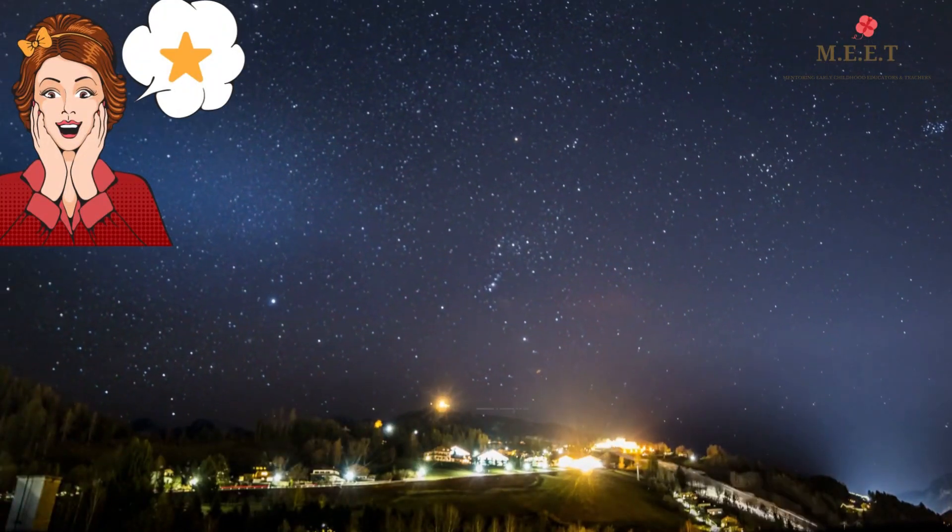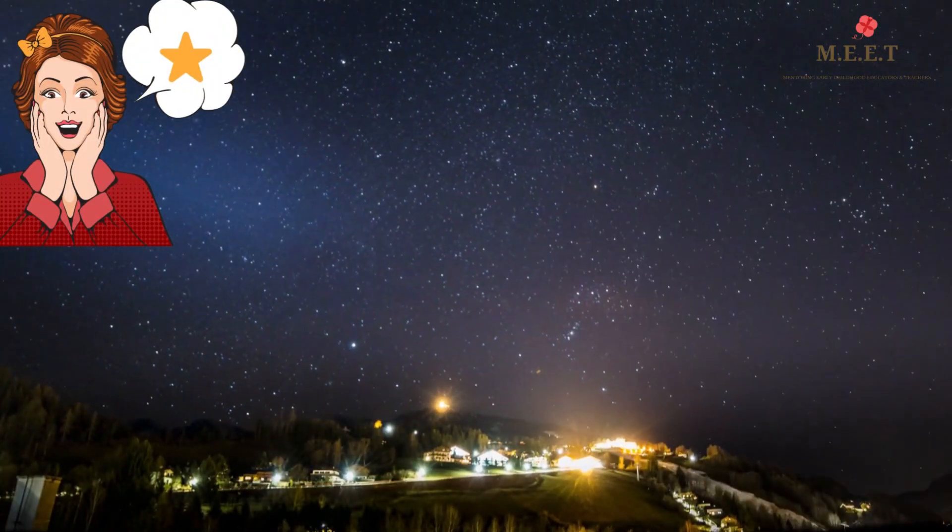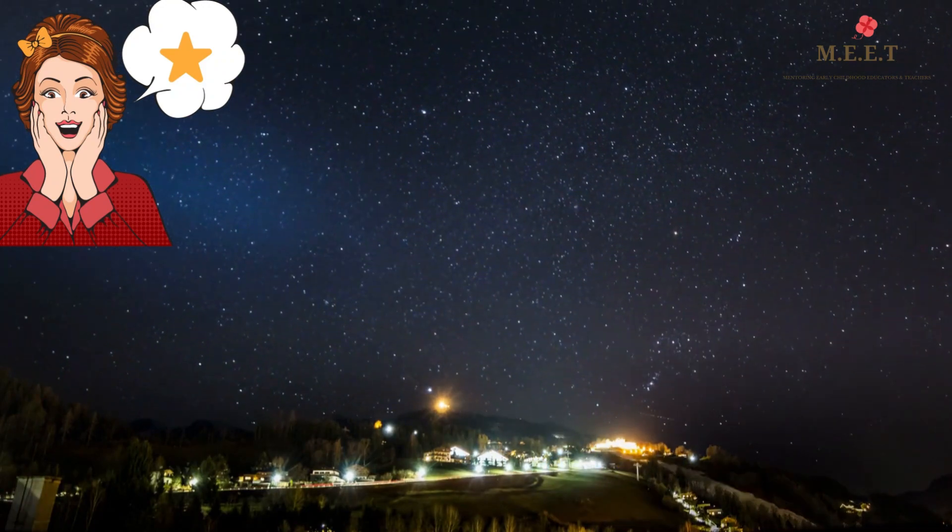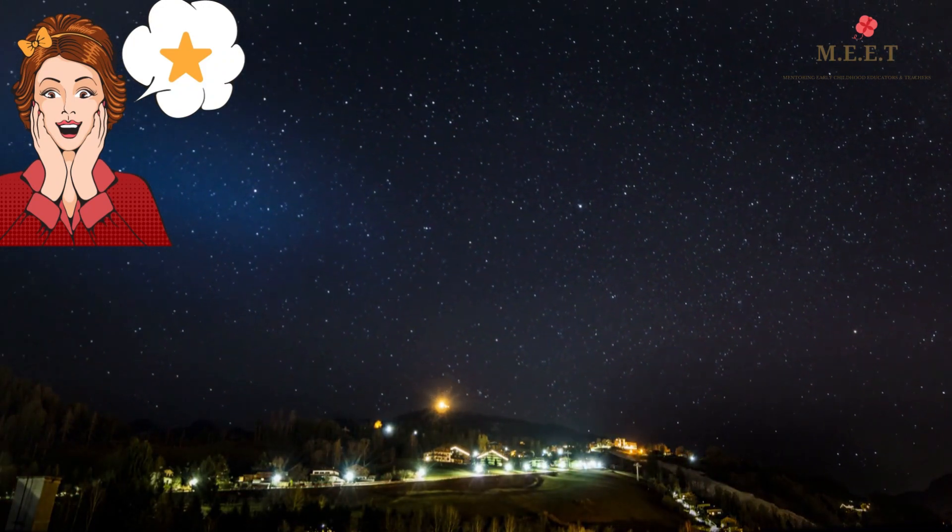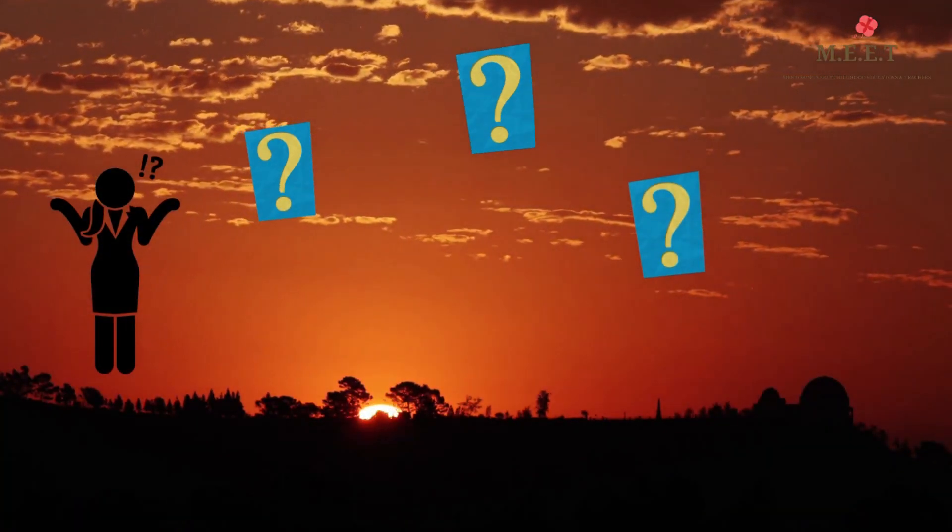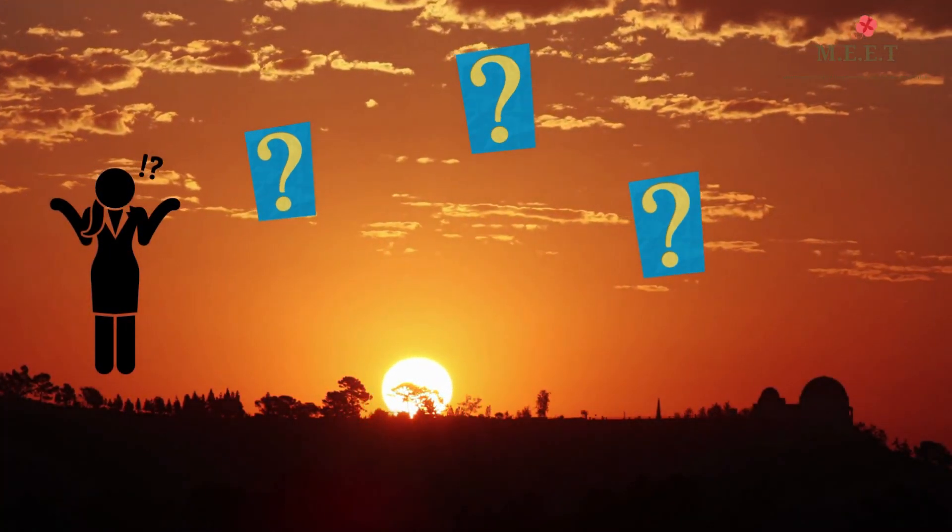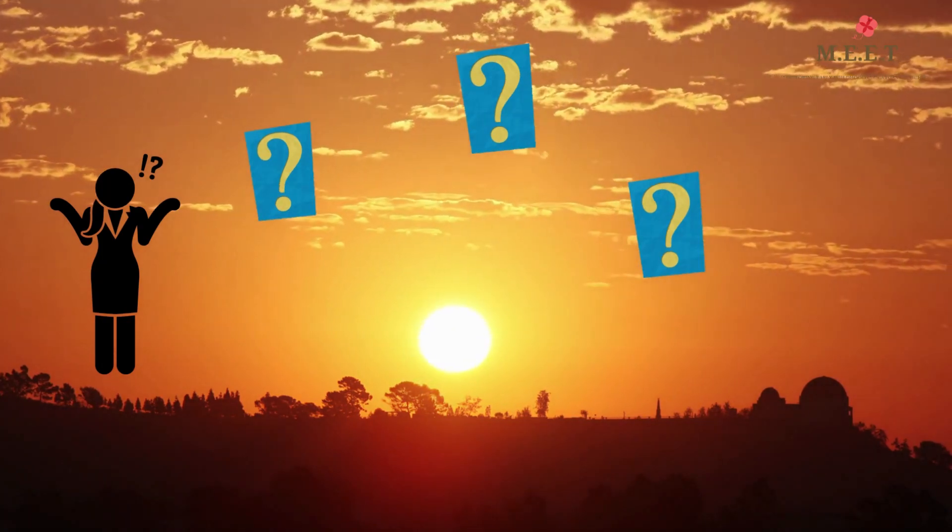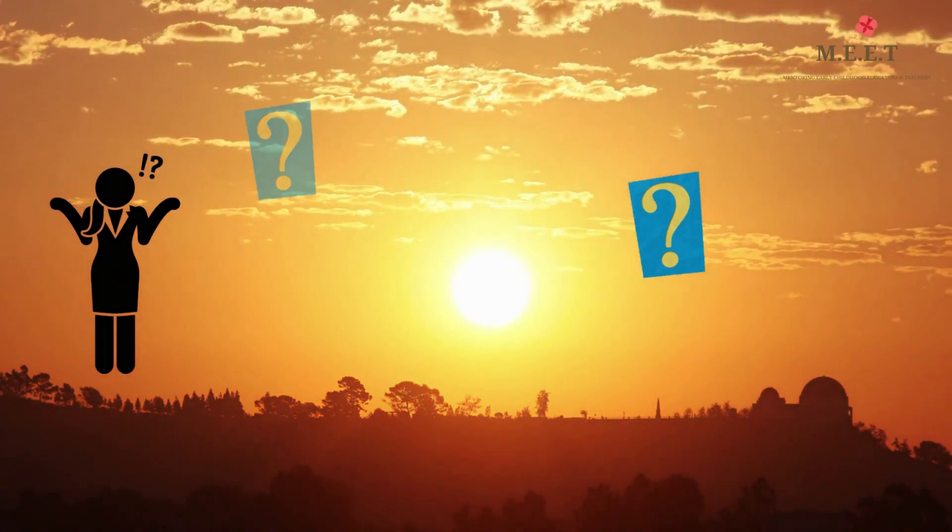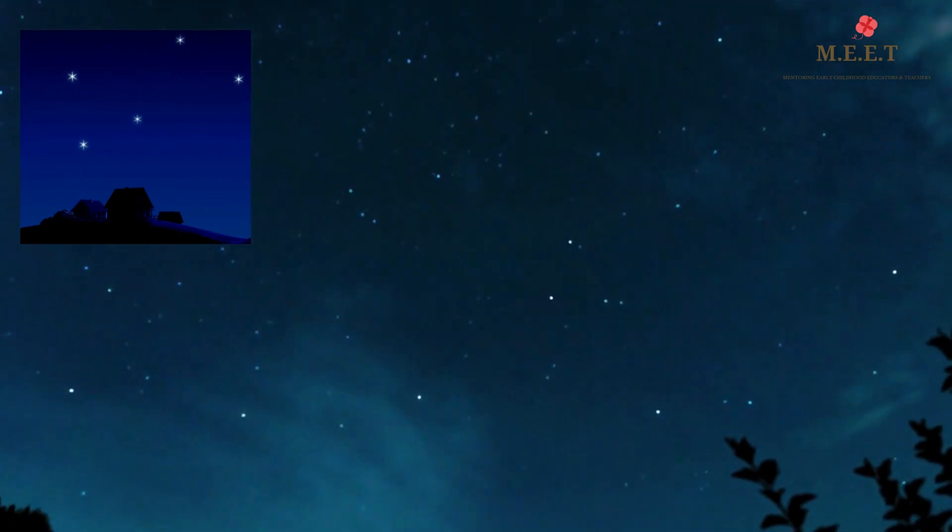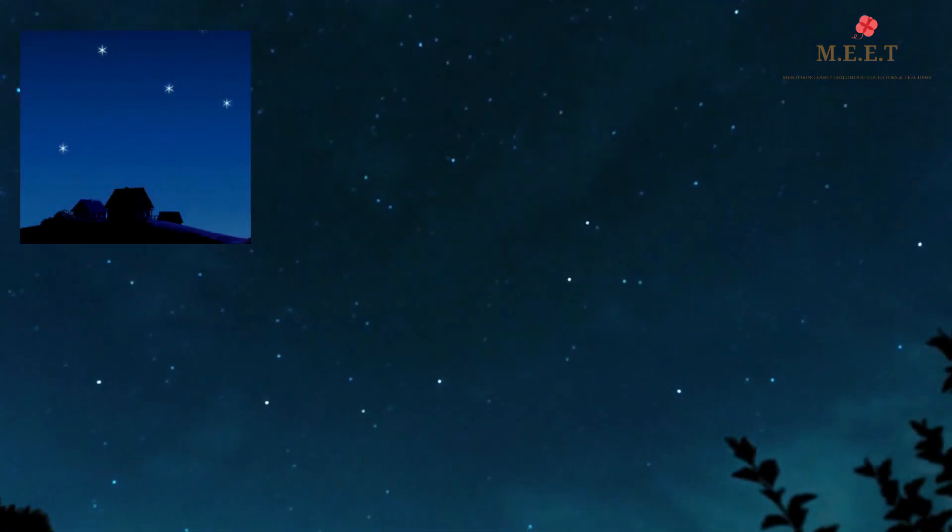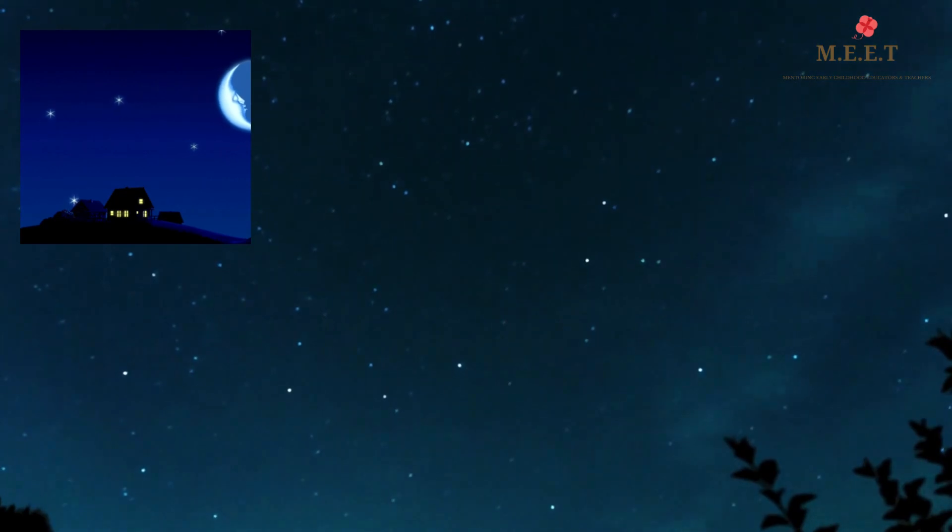Isn't it surprising that stars do not twinkle? They appear to twinkle because of the earth's atmosphere. But have you ever wondered where they disappear during the day? They continue to move across the sky but can't be seen due to the sunlight. They are only seen at night because of the absence of sunlight.